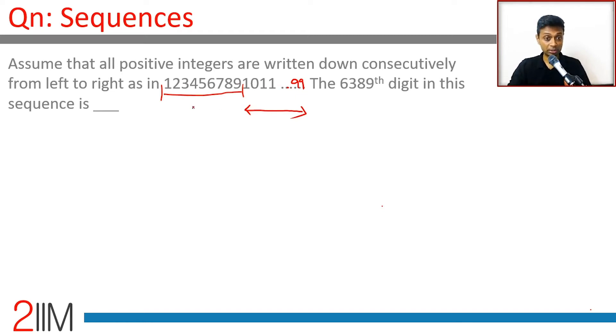There are 90 2-digit numbers, 9 single digit numbers. 90 2-digit numbers each take 2 places. So 90 into 2.